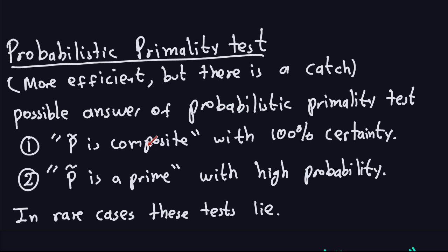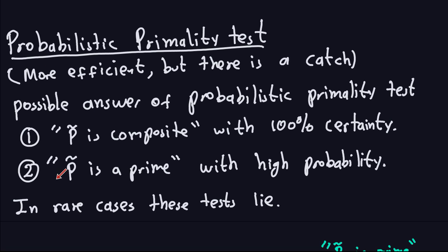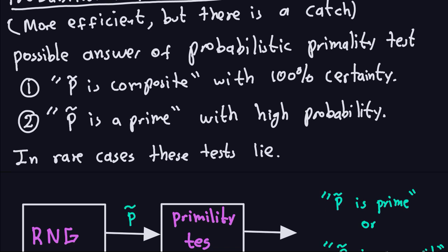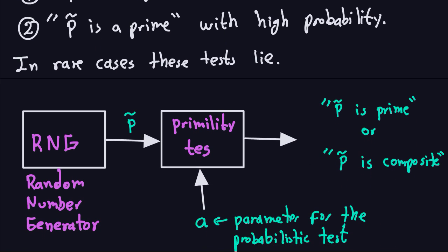Most probabilistic primality tests give one of two answers. First: 'p is composite' — with 100% certainty. When the test says the number is not prime, that is absolutely sure. Second: 'p is prime' — with high probability. In very rare cases the test lies, meaning it says p is prime when in reality it is a composite number. When the test says composite, you are certain; only the prime answer has rare uncertainty.